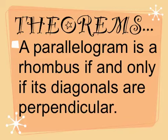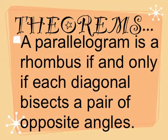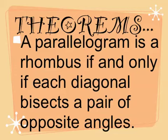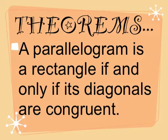Some theorems: a parallelogram is a rhombus if and only if its diagonals are perpendicular — the diagonals of a rhombus form four right angles. A parallelogram is a rhombus if and only if each diagonal bisects a pair of opposite angles, meaning the diagonals cut the angles they connect into two congruent parts. A parallelogram is a rectangle if and only if its diagonals are congruent — the diagonals must be equal to each other.